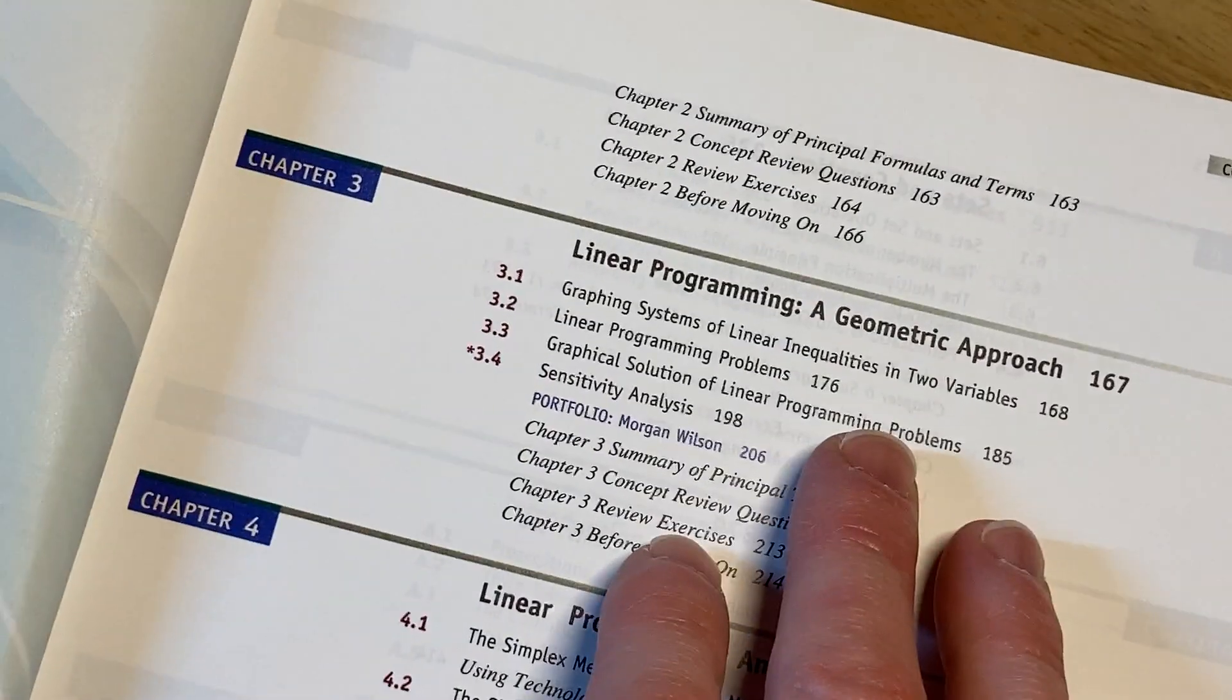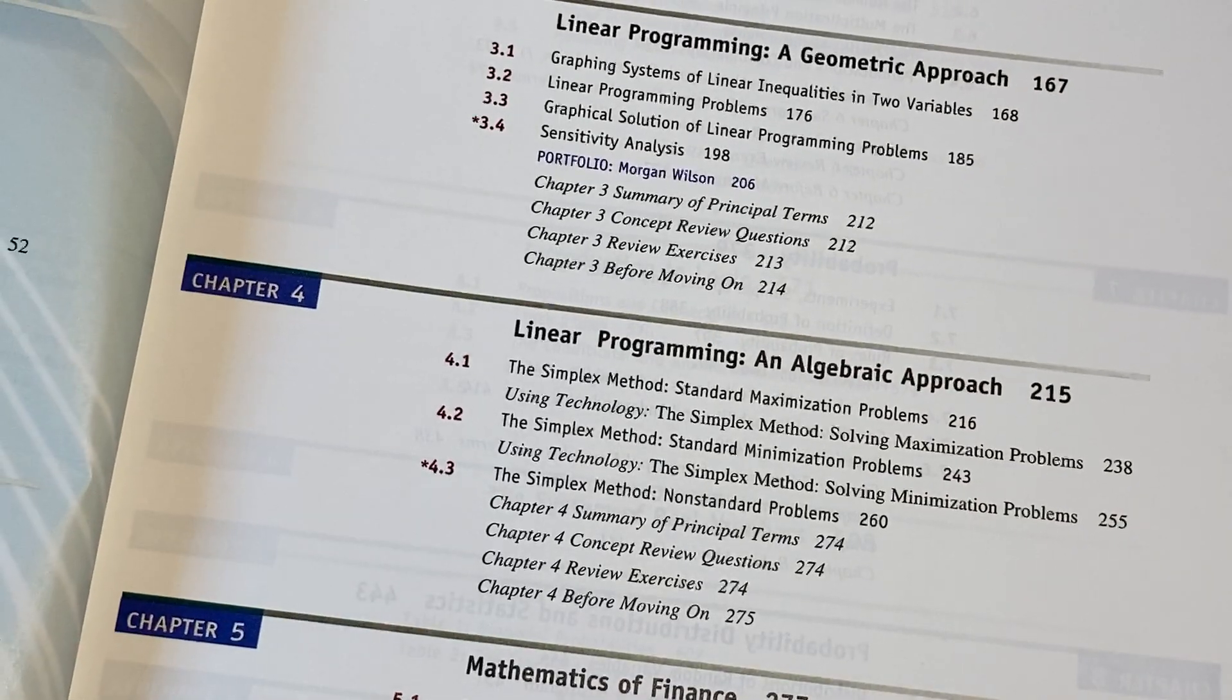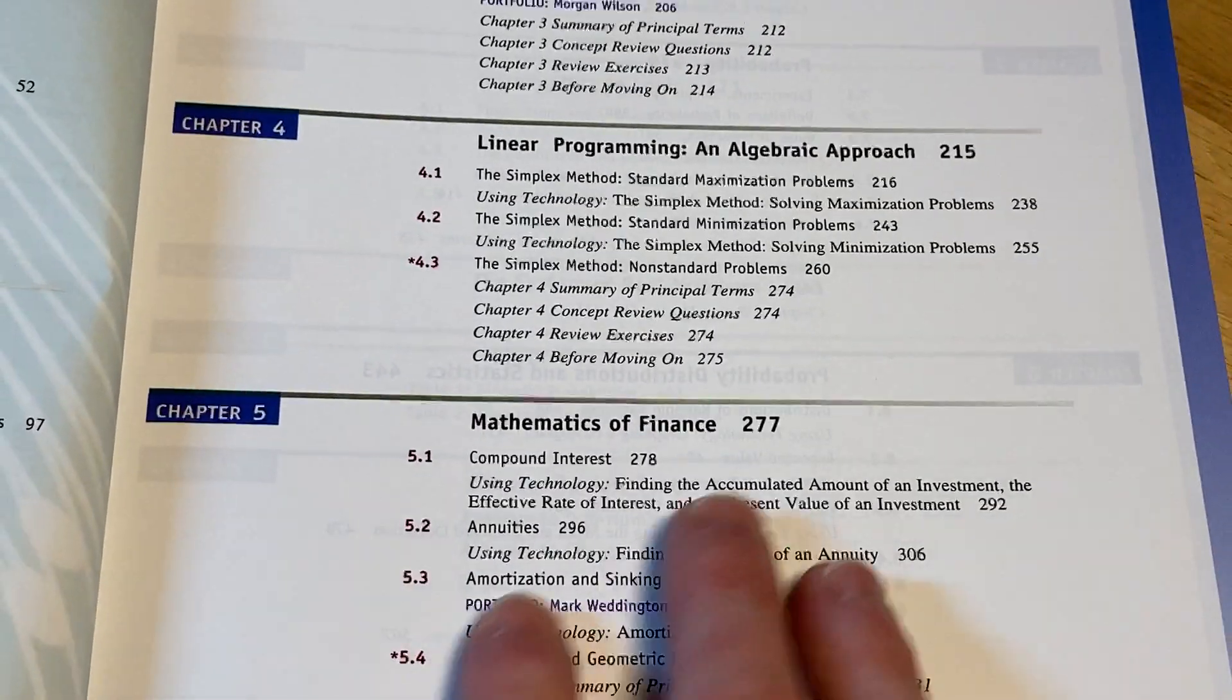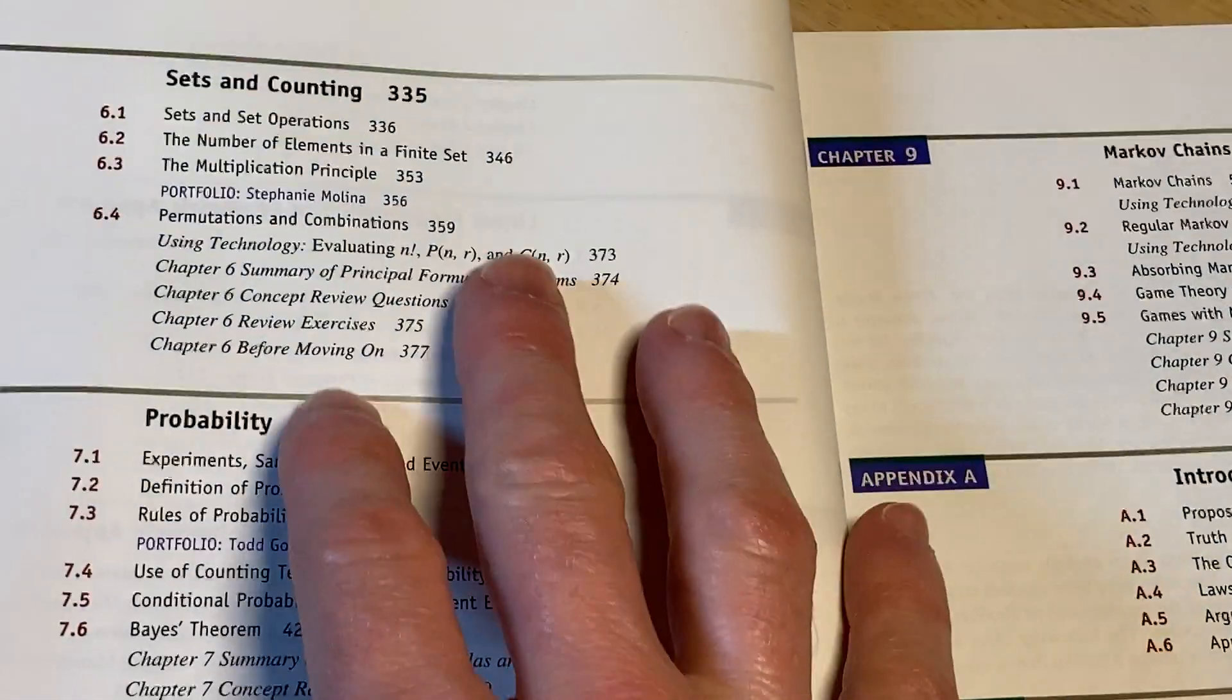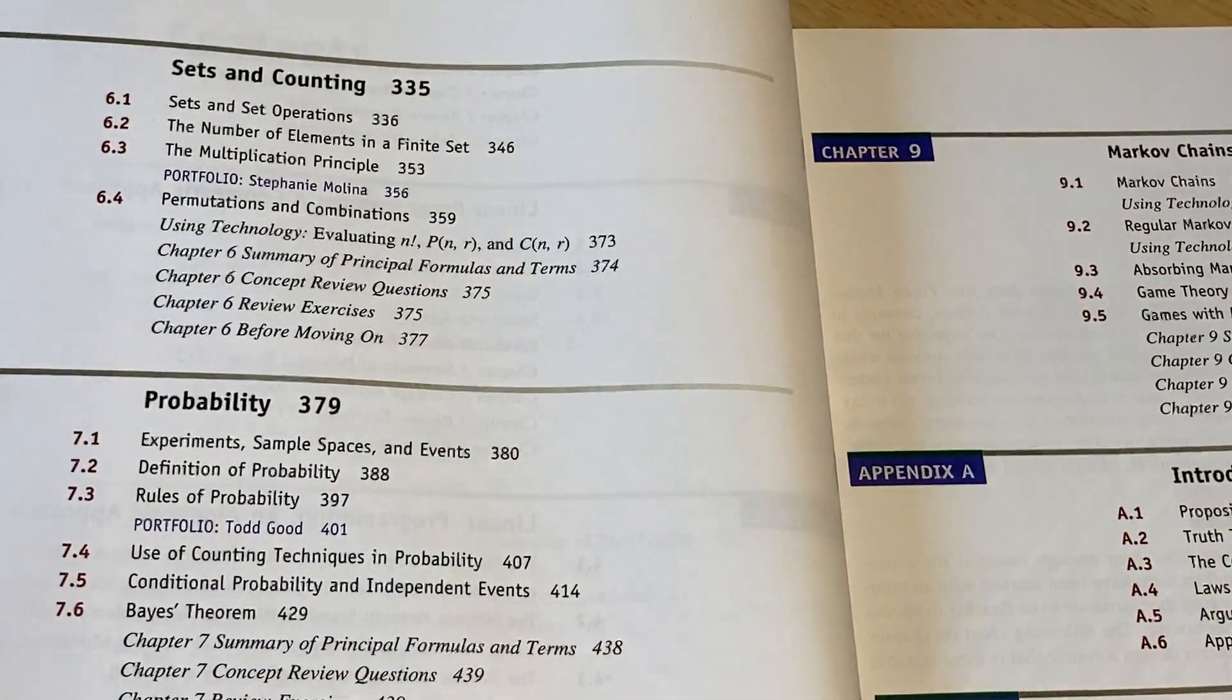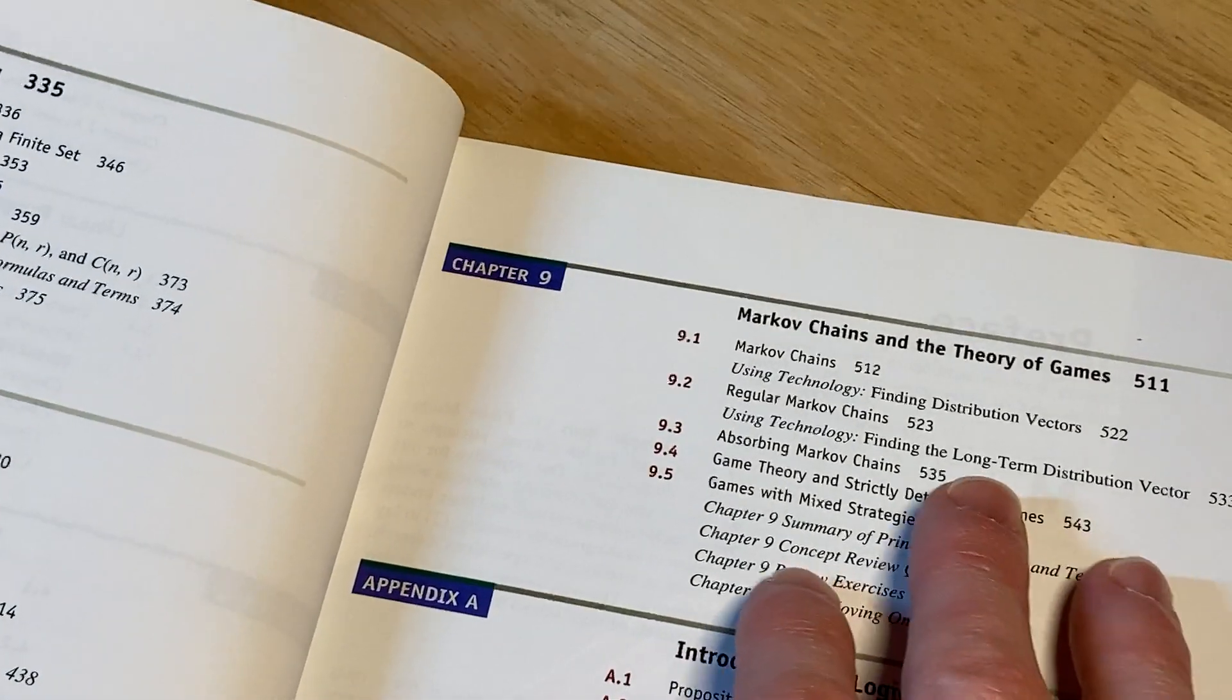Then we've got linear programming. That's something you may have not seen. Then you have more linear programming. Mathematics of finance. Again, something that a lot of people probably haven't seen. Sets and counting. Probability. Probability distributions and statistics. Markov chains and the theory of games.